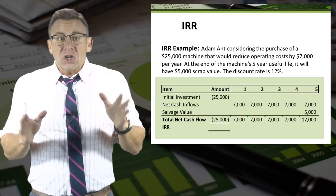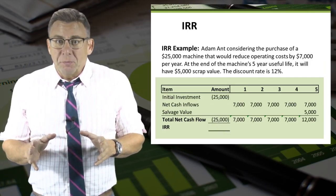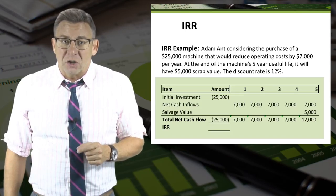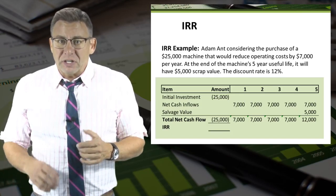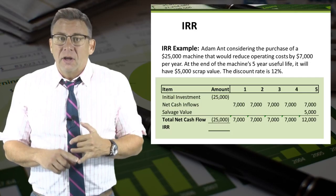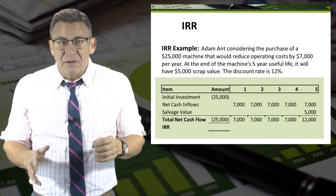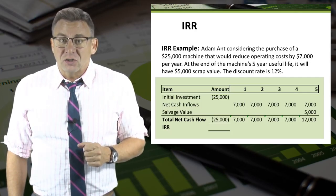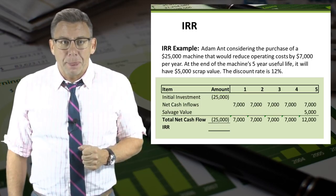Let's look at an example. Adamant is considering the purchase of a $25,000 machine that would reduce operating costs by $7,000 per year. At the end of the machine's five-year life, it will have a $5,000 scrap value. The discount rate is 12%.